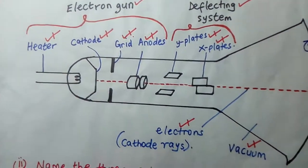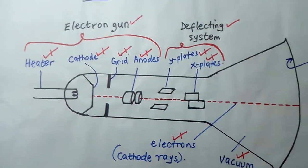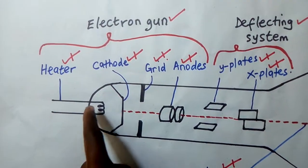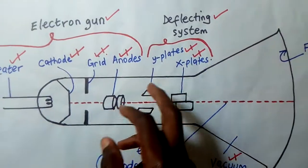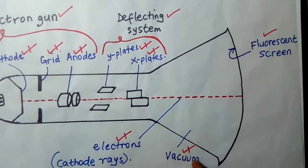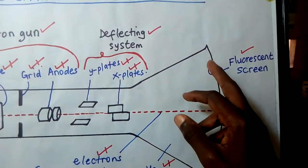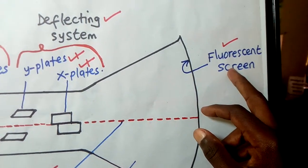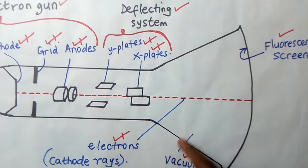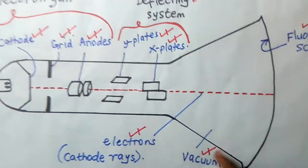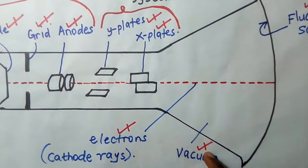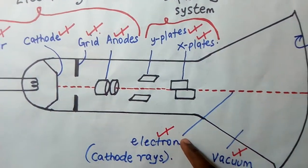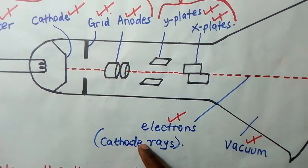This diagram looks like a torch. On this side you have what we call the heater. The other extreme end is the fluorescent screen. Inside there should be no air, so it is a vacuum. The dotted parts are electrons which are moving at a high speed, and therefore you could call them cathode rays.